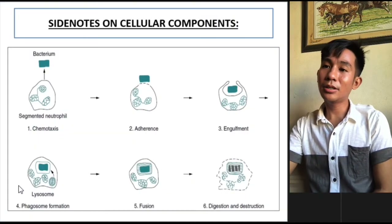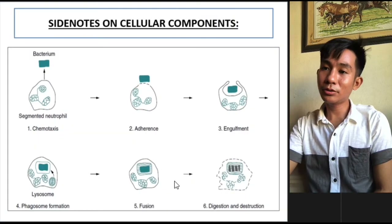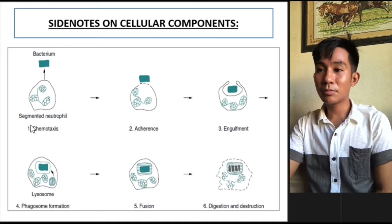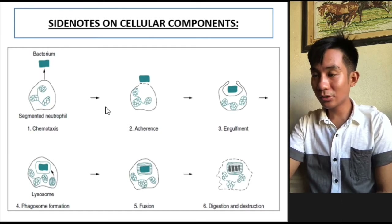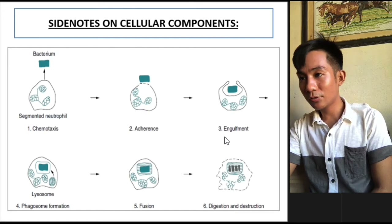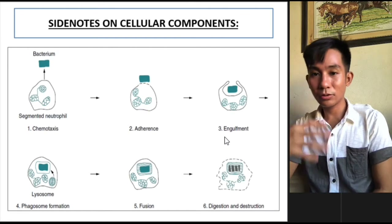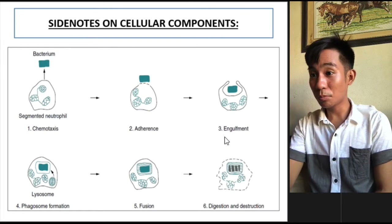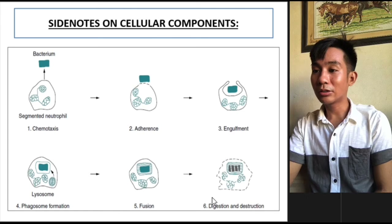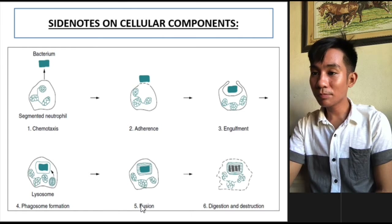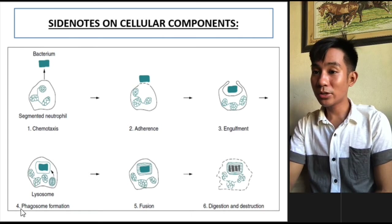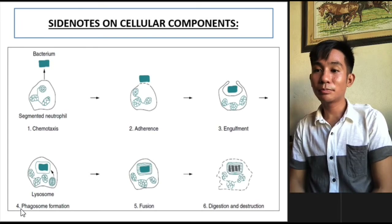I also provide here another illustration by Turgeon. So we have chemotaxis and attraction, then adherence, followed by engulfment — note the formation of phagosomes or pseudopodia — then digestion or destruction, and fusion forming the phagolysosome.